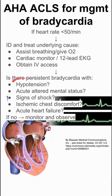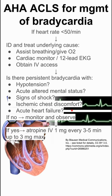If you do have any of these signs or problems, you then want to give atropine 1mg IV every 3-5 minutes, up to a maximum of 3mg of atropine. So do 3 rounds of atropine every 3-5 minutes.